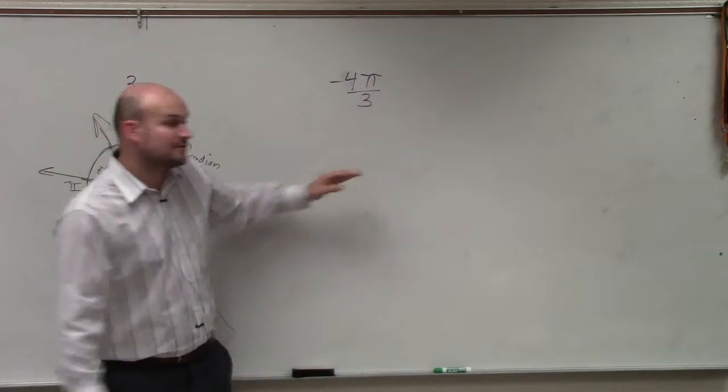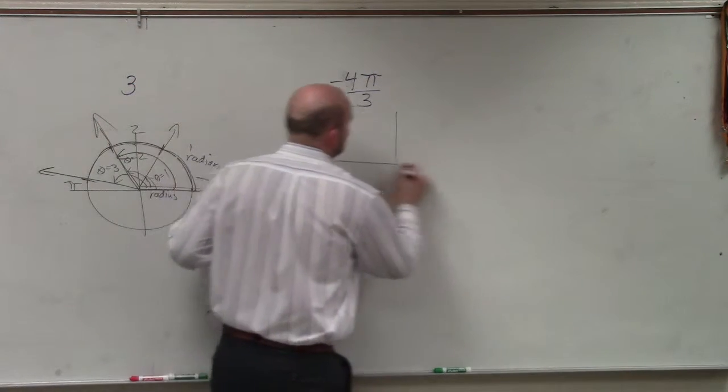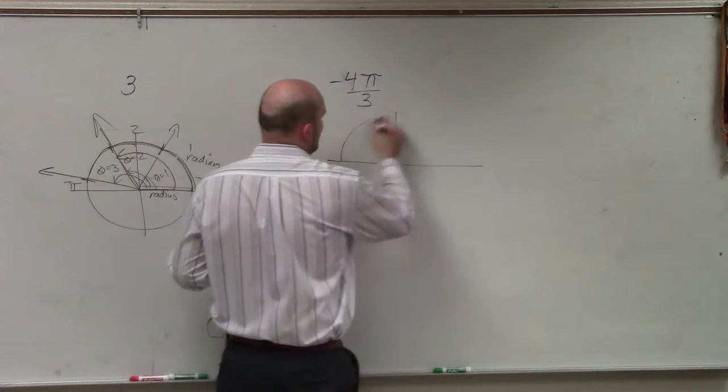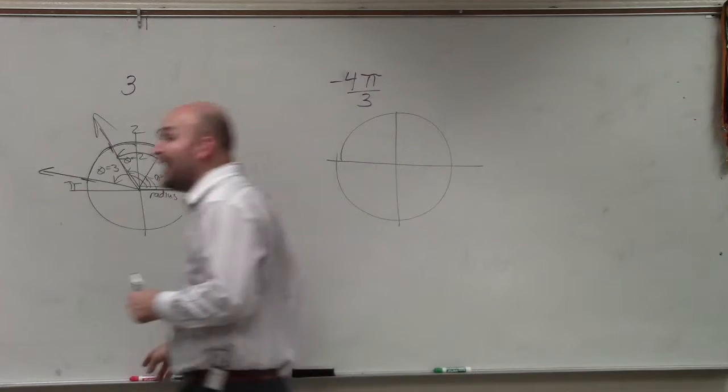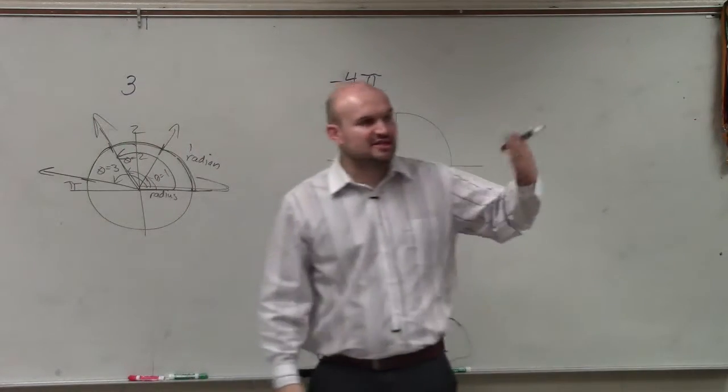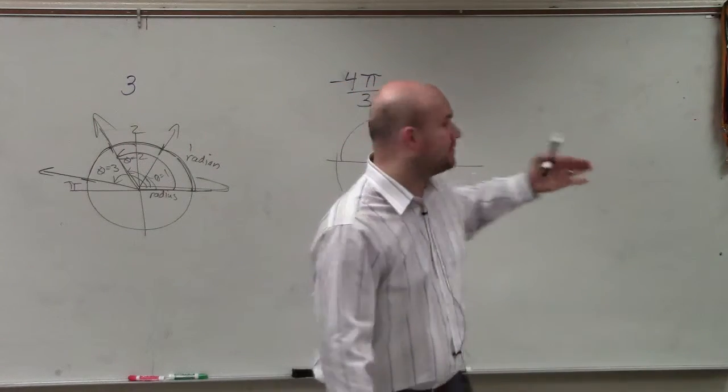So for here, you have negative 4π over 3. So what I've told you guys was, again, if you can think of this, since we know that halfway around a circle is π, it's much easier to take π and break it up the way that we need.